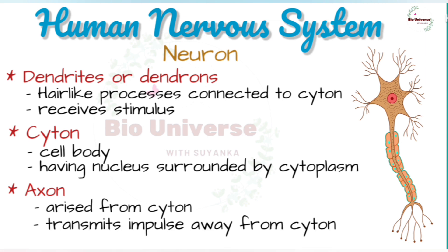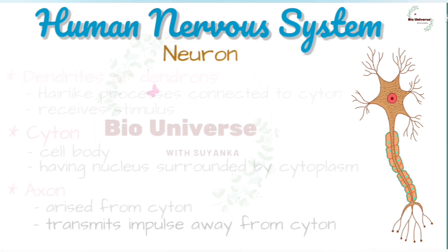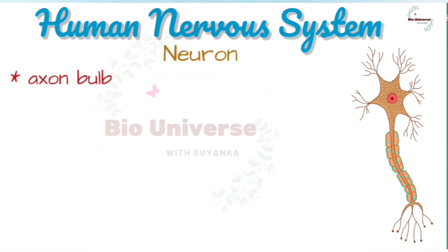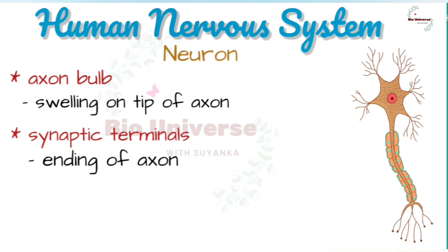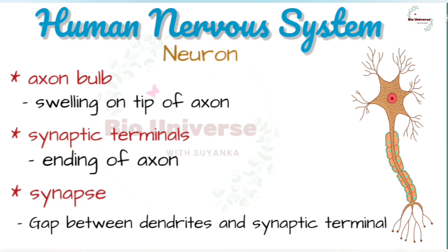The tip of the axon has a swelling called the axon bulb. The endings of an axon may be branched; these endings are called synaptic terminals. The gap between a synaptic terminal and the dendrite of another neuron or an effector cell is called a synapse.